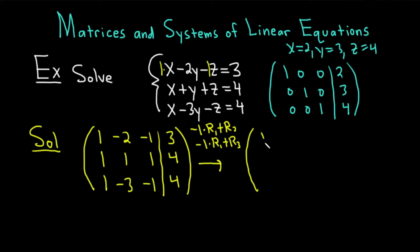First row is unchanged. So 1, negative 2, negative 1, and you have your 3. And now we're going to do the operations. And there's a lot of mental computation, so it just takes practice. Let's do the first operation. Negative 1 times row 1 plus row 2. Negative 1 plus 1 is 0. That's the whole point. 2 plus 1 is 3. 1 plus 1 is 2. Negative 3 plus 4 is 1.